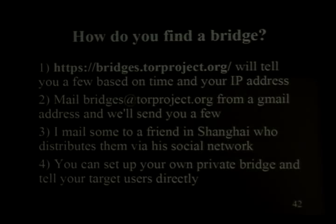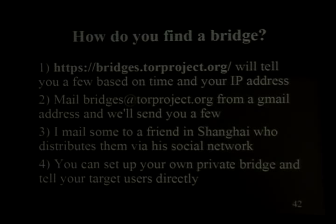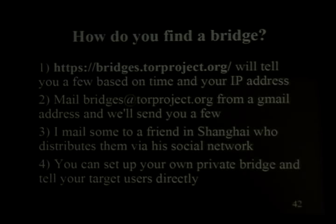We have four ways of giving out bridges. First: go to bridges.torproject.org over HTTPS — we look at where you're coming from and give you a few answers, so to learn all of them you'd need to come from many different places. China broke this in September 2009 by enumerating all bridges. Second: email bridges.torproject.org from your Gmail account and we send you a few — to learn many, you'd need many different Gmail accounts, which Google makes hard because they're already battling spammers. China actually waited until March 2010 to break that one.